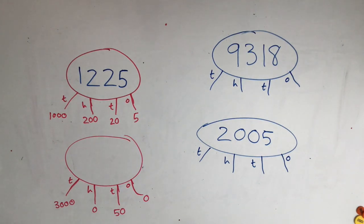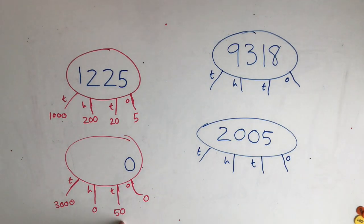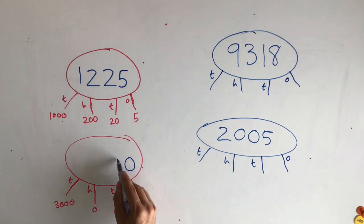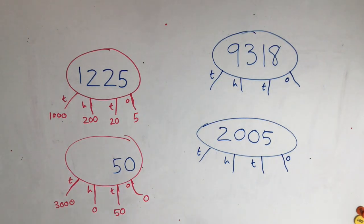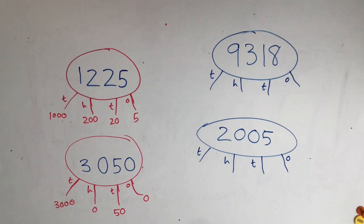Let's have a look at the second one. I can see here that there are no ones so I need to start by writing a 0. The value here in the tens is 50 so I write a 5. There are no hundreds as well so I put another 0 and I've got 3,000 so I write a 3. Let's have a go at reading them. This first one is 1,225 and the bottom one is 3,050. Remember to miss out the two sections where they don't have any value.